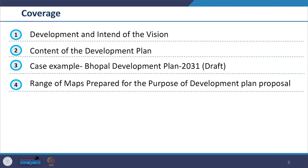We shall be reviewing the estimation methods later in the course. Today, we are going to see how vision and mission is indicated in the document and what is covered in the Development Proposal and how it is provided in the document. The coverage of this session will include development and intent of the vision, content of the Development Plan particularly Development Proposals, the Case Example of Bhopal Development Plan 2031, and the range of maps prepared for Development Proposals.